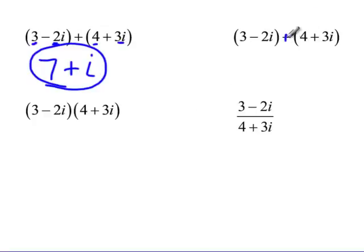Over here with subtraction, I always like subtracting by changing the signs and adding. So that would give me 3 and negative 4, which would be negative 1. It gives me negative 2i and negative 3i, which would be negative 5i. So again, pretty straightforward. Adding, subtracting, no problem whatsoever.